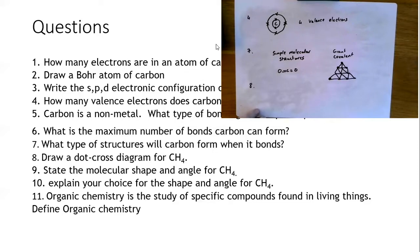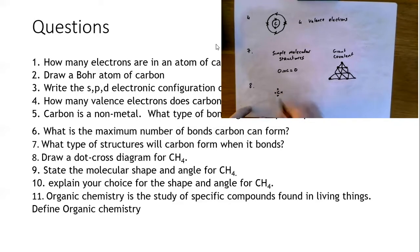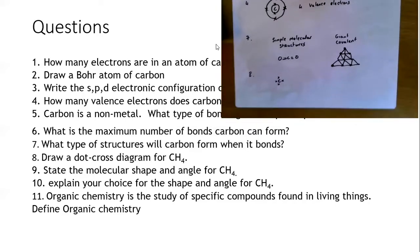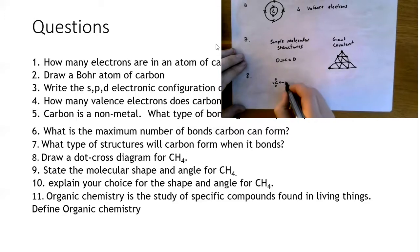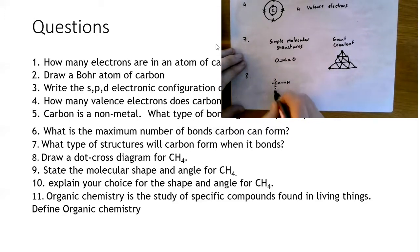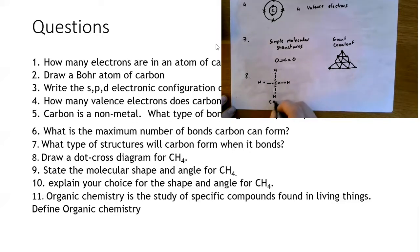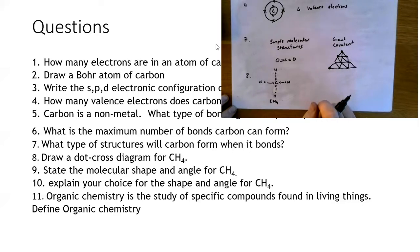Question eight: draw a dot and cross diagram for CH4. Carbon has four valence electrons, so we draw the four crosses, and it's going to be covalently bonded to four hydrogens. We show this covalent bond with a line. So there's the first hydrogen, second, third, and fourth. This is the dot and cross diagram for the CH4 molecule.